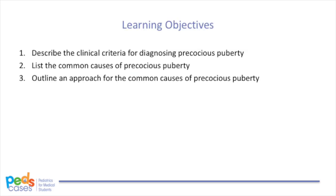By the end of this session, the learner should be able to: describe the clinical criteria for diagnosing precocious puberty, list the common causes of precocious puberty, and outline an approach for the common causes of precocious puberty.